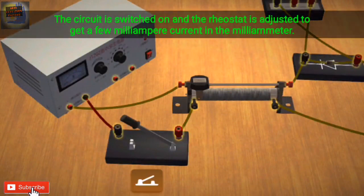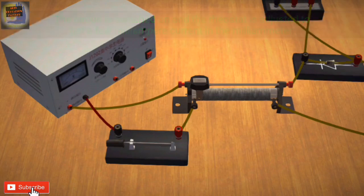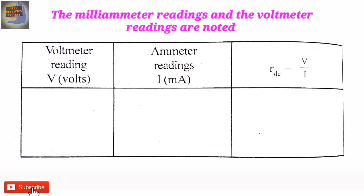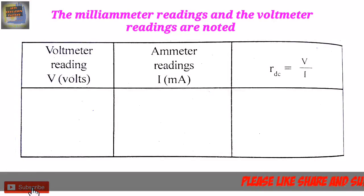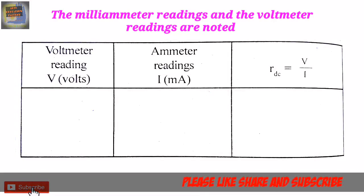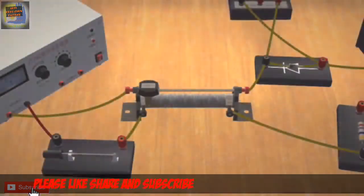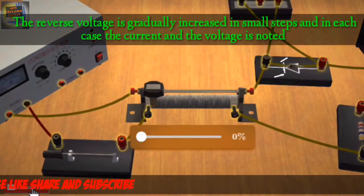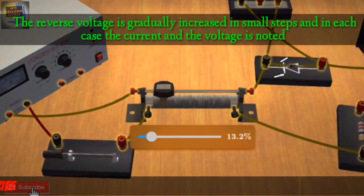The 1K resistor is used to get a few milliampere current in the milliammeter. The milliammeter readings and the voltmeter readings are noted. The reverse voltage is gradually increased in small steps and in each case the current and the voltage is noted.